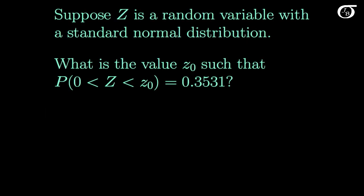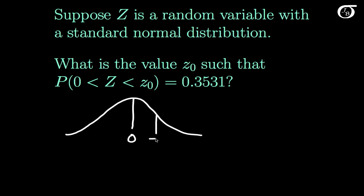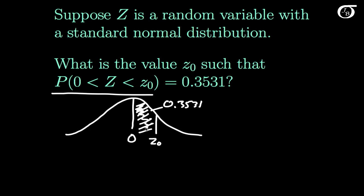Suppose Z is a random variable with a standard normal distribution. What is the value Z₀ such that the probability Z lies between 0 and Z₀ is 0.3531? First we should draw our standard normal curve — a bell-shaped curve symmetric about 0, with total area under the entire curve equal to 1. We are trying to find the value Z₀ such that the area between 0 and Z₀ is 0.3531. The probability the random variable Z falls between 0 and Z₀ is simply the area under the curve between 0 and Z₀, so we need the value of Z that makes this happen.